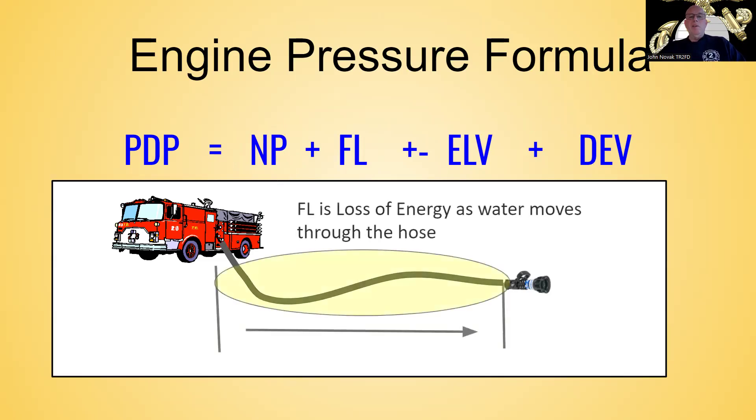So friction loss can basically be defined as the loss of energy as water moves through the hose. So if I require 100 psi nozzle pressure here at the nozzle, I have to flow more than 100 psi at the pump panel. Because as the water moves through the hose, there's turbulence, and the water molecules are rubbing against each other, they're rubbing against the hose. So basically, they're losing energy. So I have to pump a higher pressure at the pump panel to get the water to come out at the desired nozzle pressure at the end of the line.